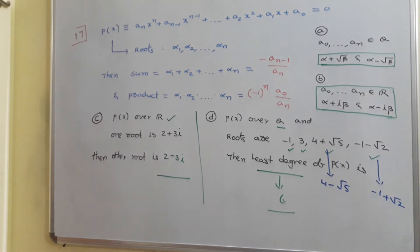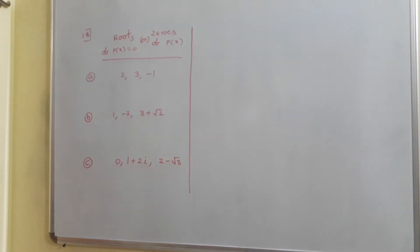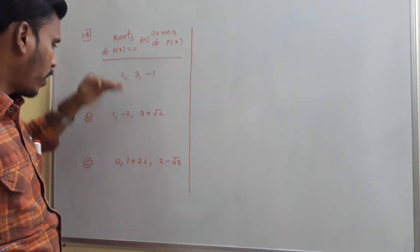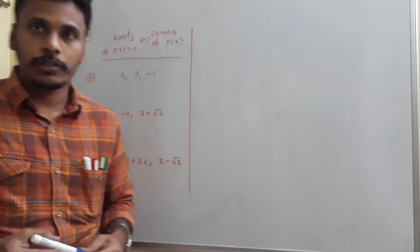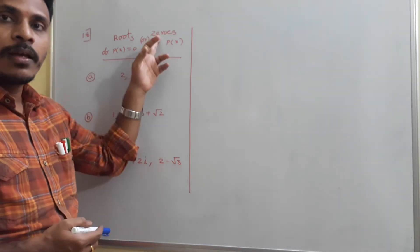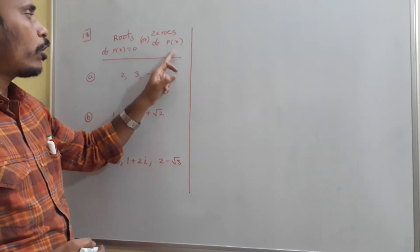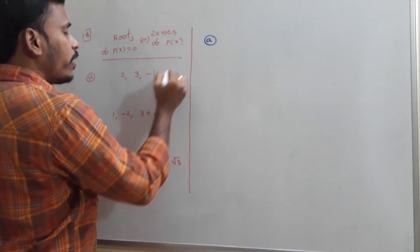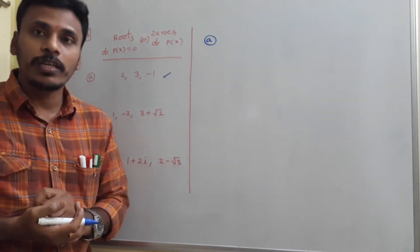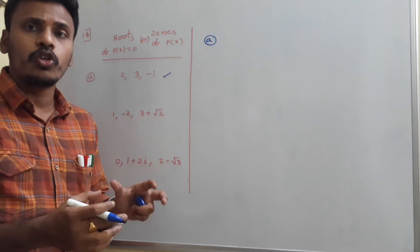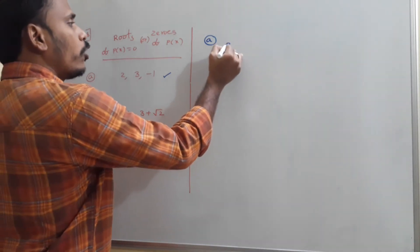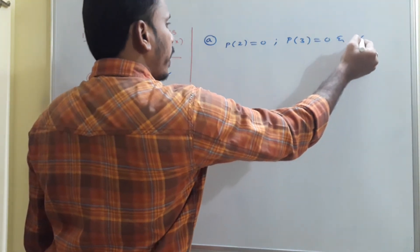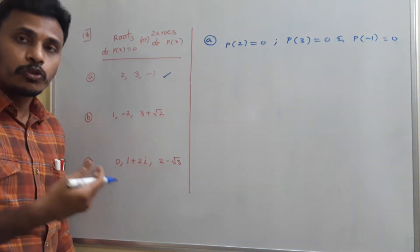This is all point 17. Now going to point 18: zeros or roots of the polynomial equation are given and we need to write the polynomial and the polynomial equation. If the zeros are 2, 3, and -1, then P(2)=0, P(3)=0, and P(-1)=0. By the factor theorem, x-2, x-3, and x+1 are factors of P(x).